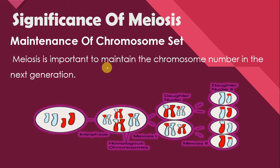Meiosis is important to maintain the chromosome number in the next generation. As we know, meiosis is a reduction division. When a diploid parent cell undergoes meiosis, it produces four haploid cells. The number of chromosomes in the parent cell is reduced due to meiosis, meaning the number of chromosomes in those cells is half compared to the parent cell.